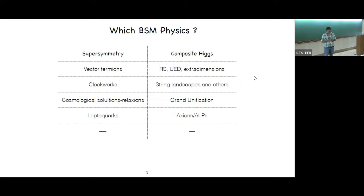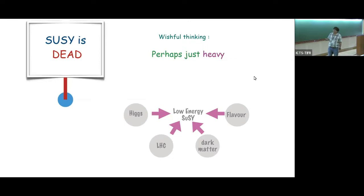With these motivations, one can construct a lot of new physics. There are several of these new physics: supersymmetry, composite Higgs, vector fermions, Randall-Sundrum, UED, clockworks, string landscapes, cosmological solutions, relaxions, all of these things. There are quite a few, and I don't think I'll be able to cover many of these things. I'll cherry pick a few things which I like, which are natural. I'll give one example of natural phenomena and one example without naturalness.